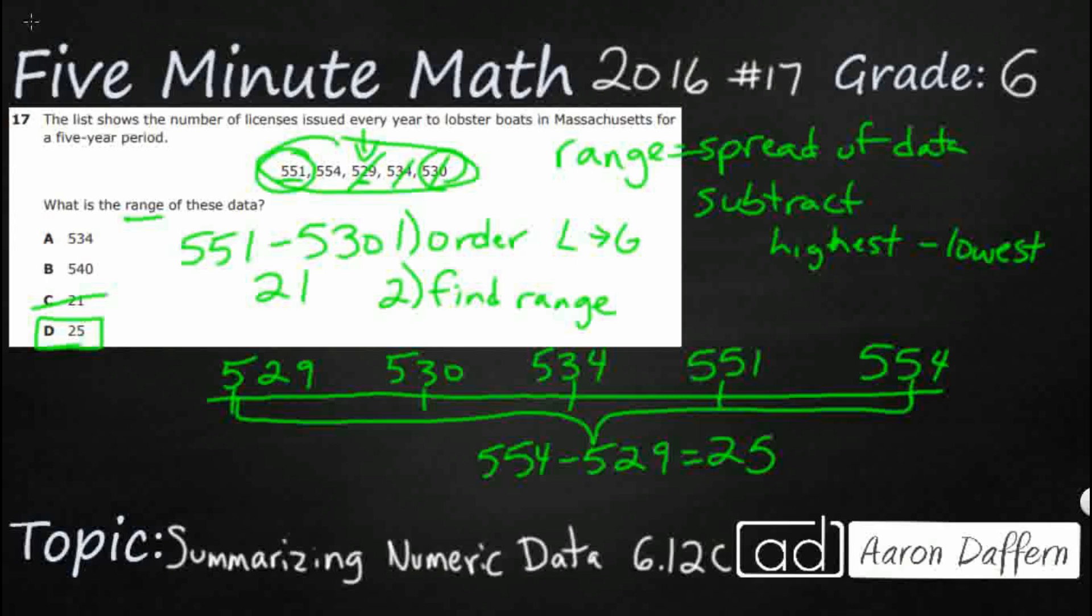Now, A534, 534 is just simply a number. It's just one of the five numbers, and so if you have no idea what range is, you might choose A because it's the only number from our answer selections A, B, C, and D that actually shows up in our data set. So you think you have to choose just one of the numbers.